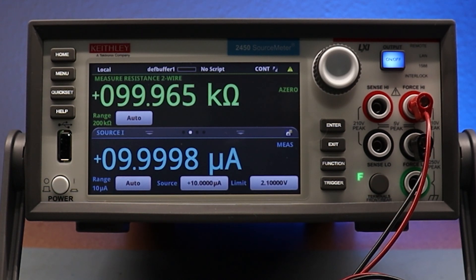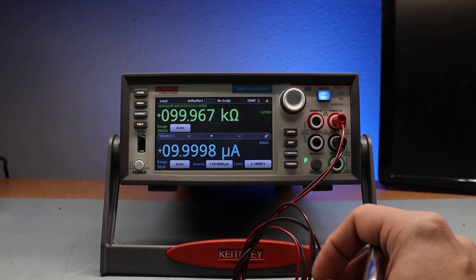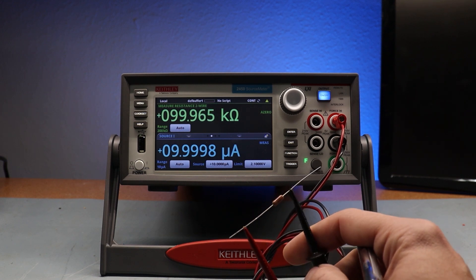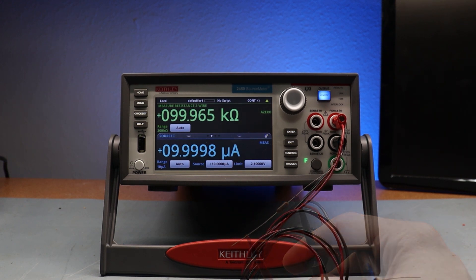In fact if I switch the display to show resistance you can see the calculated result: 99.965 thousand ohms. And that is in fact what I have attached here, a hundred kilo ohm resistor, and that happens to be within its five percent tolerance range.